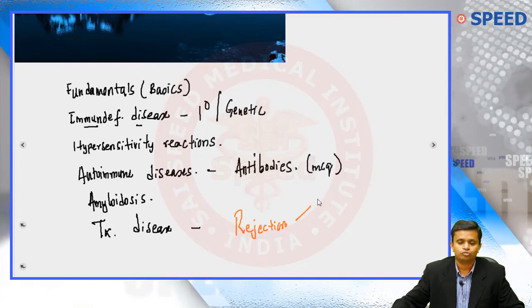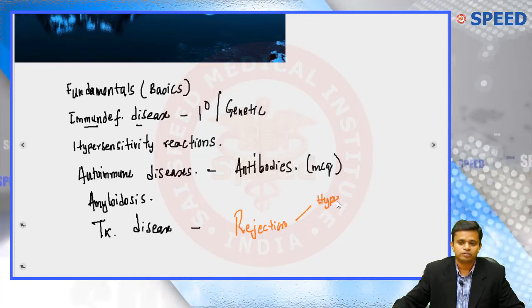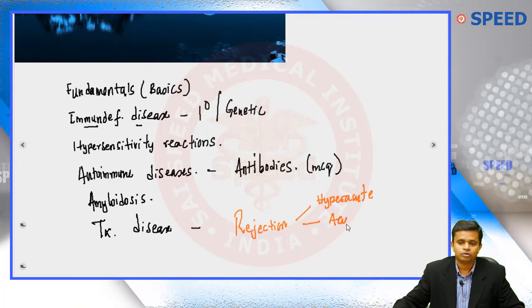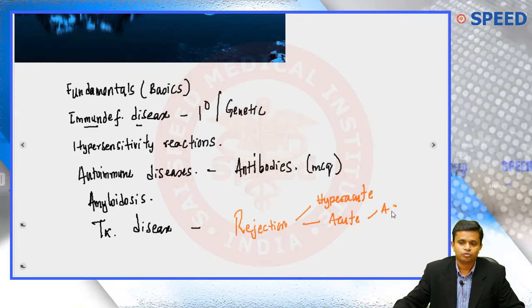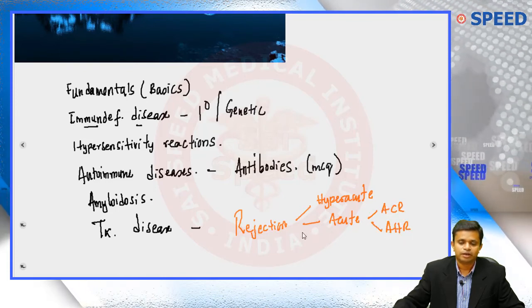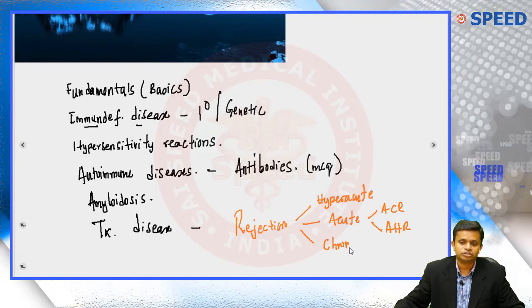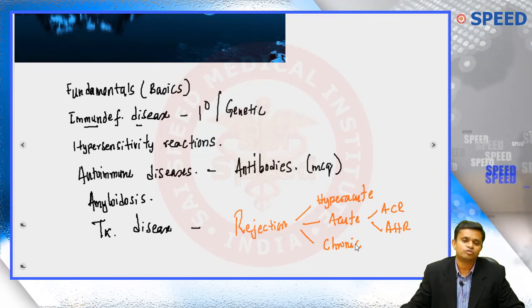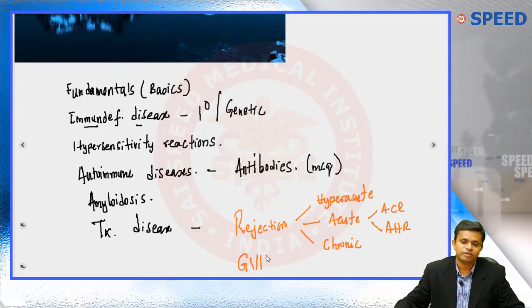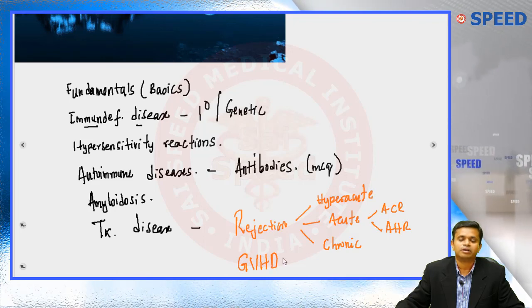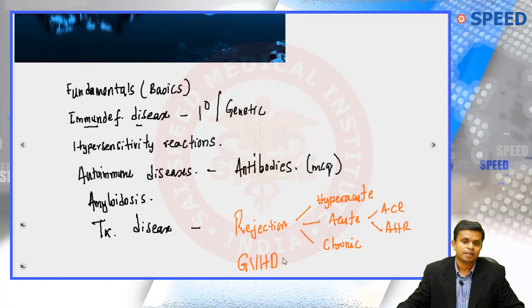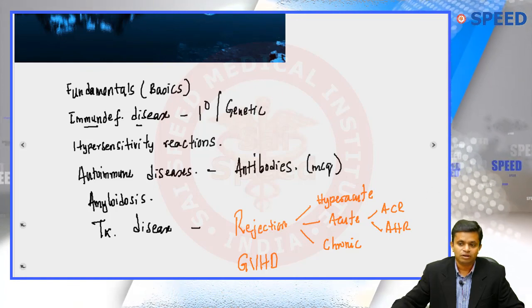In rejections, you should know about hyperacute rejection, acute rejection — which is further classified into acute cellular and acute humoral rejection — and finally chronic rejection. Transplantation disorders primarily emphasize rejection. Additionally, we recently got questions on graft versus host disease, and we will learn this from this chapter as well.